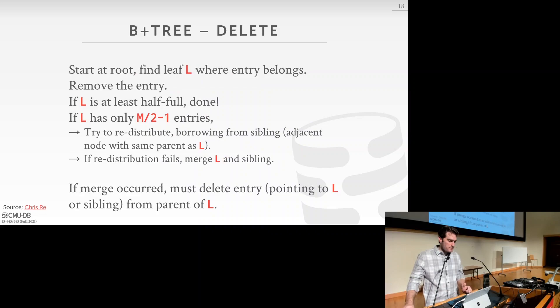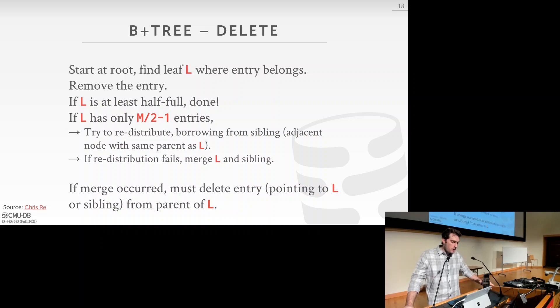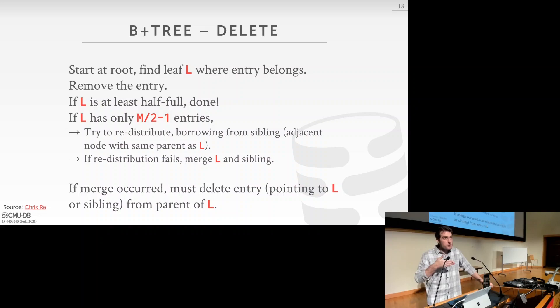Deletion is the inverse: start at the root, find the leaf L, remove the entry. If L is still at least half full, we're done. Otherwise, we need to either borrow from a sibling or merge a node with its sibling to maintain the half-full property. If a merge occurs, go up to the parent and delete the pointer to the merged node. This can propagate up to the root, reducing the tree height by one layer.